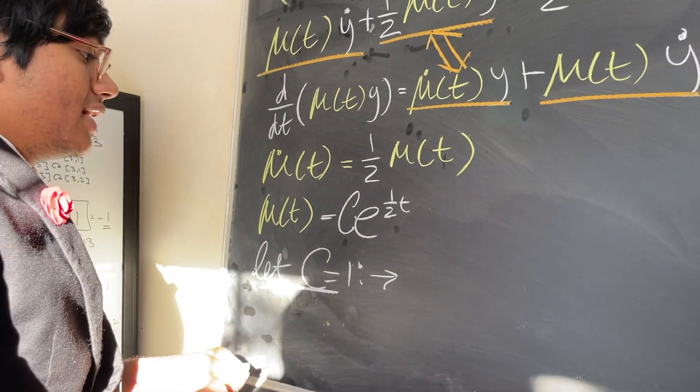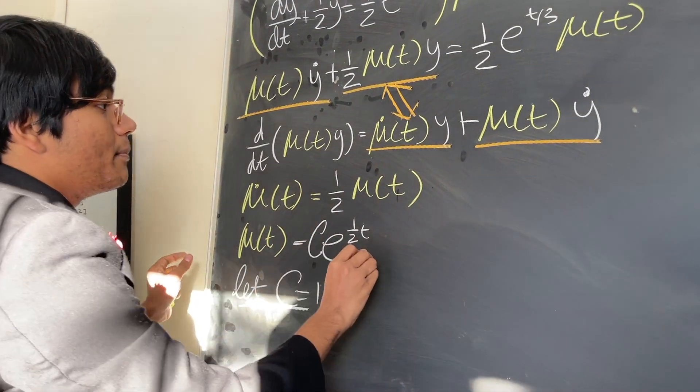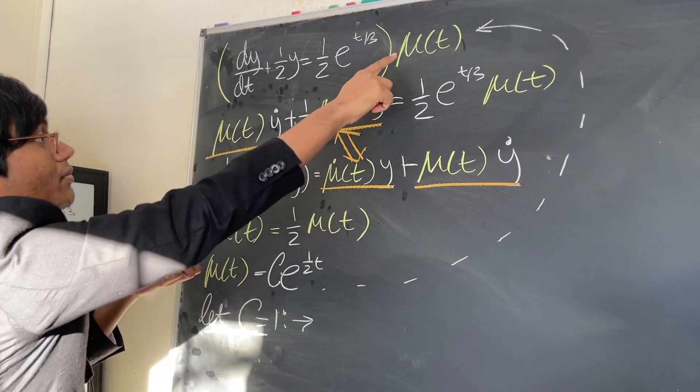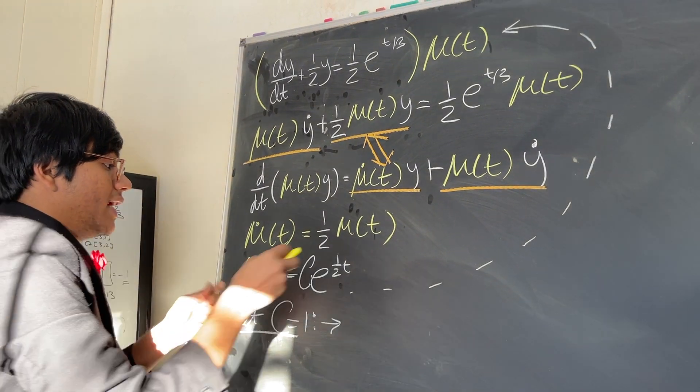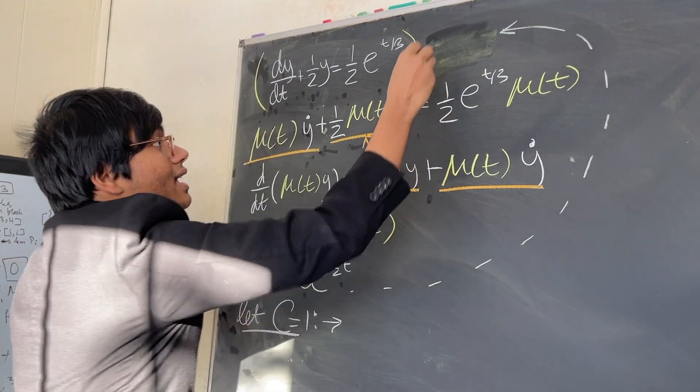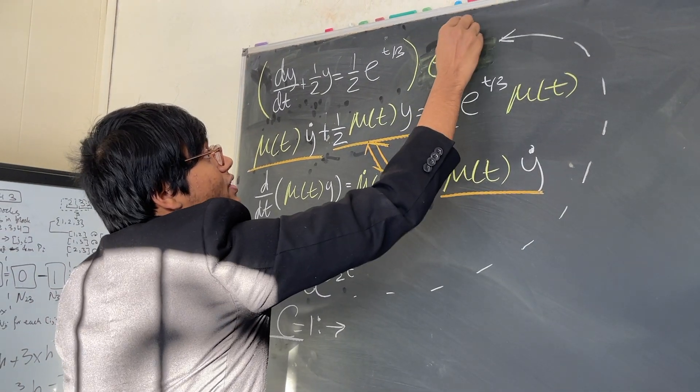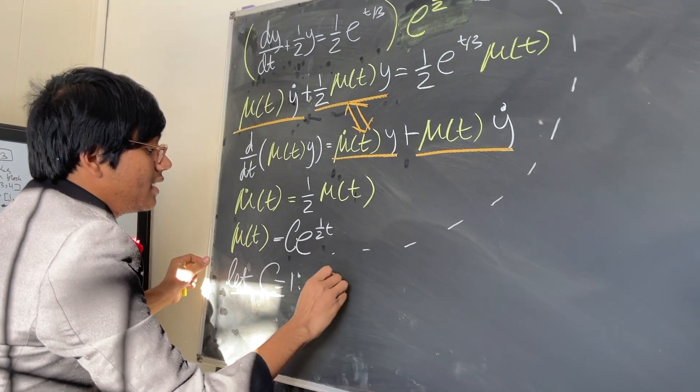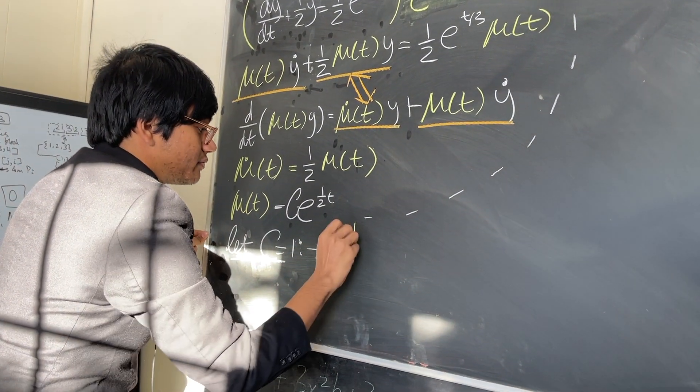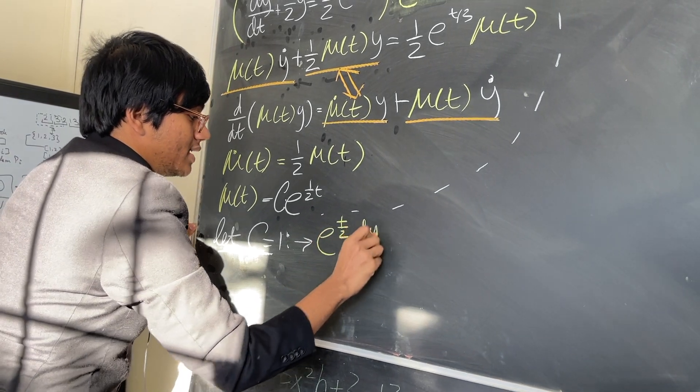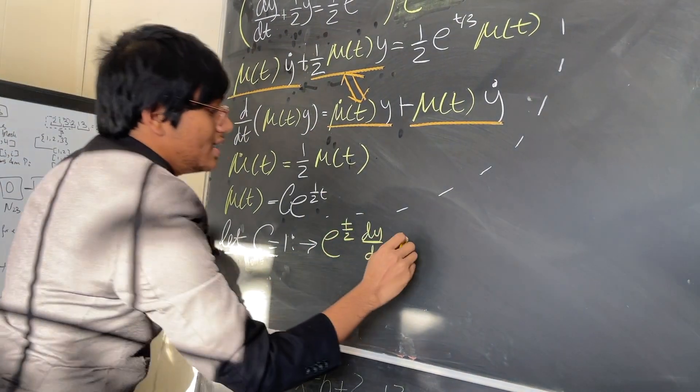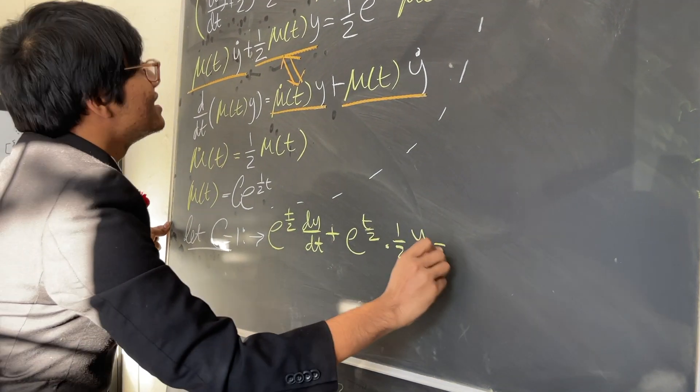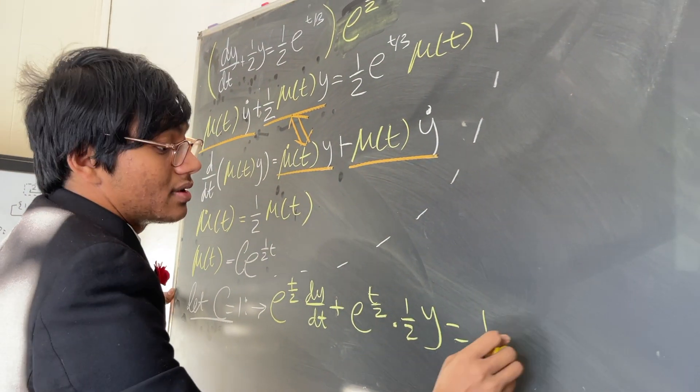So now that we know what mu of t is, we can come back to the original function and multiply both sides by mu of t. So what happens when I multiply both sides here? Now I know what mu of t is, now I don't have to write that, I can write e to the t over 2. So what happens when I multiply both sides by that? Well, this is what I get. I get e to the t over 2 dy/dt plus e to the t over 2 times half y.